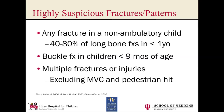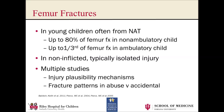Femur fractures are very often abuse. In kids who are non-ambulatory, it's abuse 80% of the time. Once they start walking, it drops to about a third. In non-inflicted injury, it is typically an isolated injury. There are a lot of studies looking at injury plausibility models trying to sort out which femur fractures are abuse and which aren't. Unfortunately, any fracture can fall into either category — you may have a child with a spiral fracture that is non-abusive and a buckle fracture that is abusive. What matters is that the history and mechanism has to match the fracture that you see.